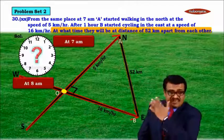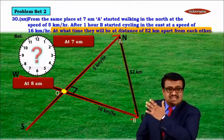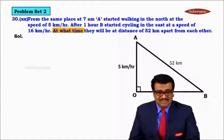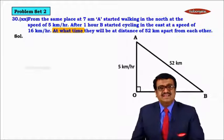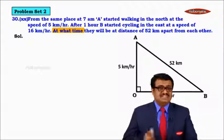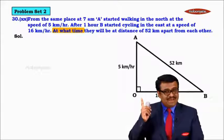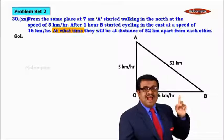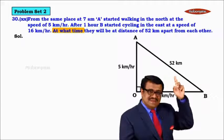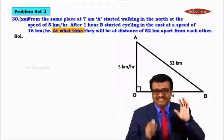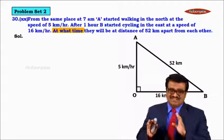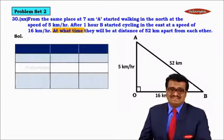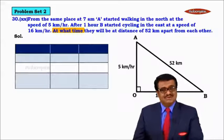If you observe, this forms a right-angled triangle. Let us draw the right-angled triangle OAB. The speed of A is 5 kilometers per hour, the speed of B is 16 kilometers per hour, and the distance between A and B is 52 kilometers. Let us tabulate this data — first for A and then for B.